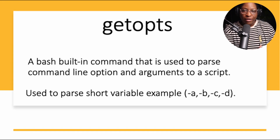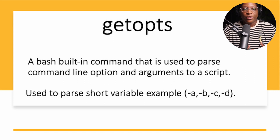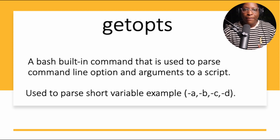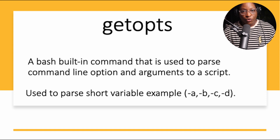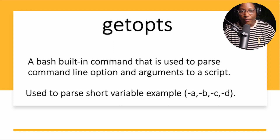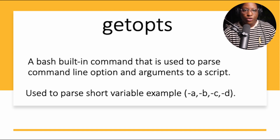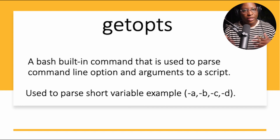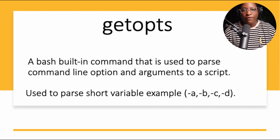getopts with the 's' is a built-in bash command, so you don't have to download any extra packages. It comes with Linux automatically and is used to parse command line options and arguments to a script. getopts uses short variables, for example -a, -b, -c, or whatever you put in your argument.